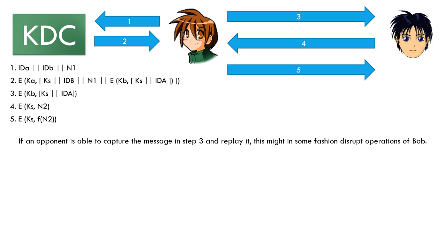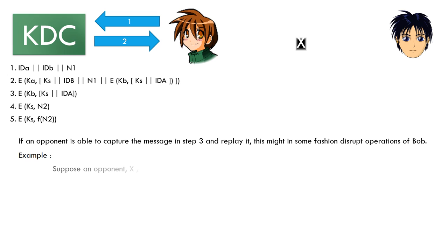If an opponent is able to capture the message in step 3 and replay it, this might in some fashion disrupt the operations of Bob. For example, suppose an opponent X has been able to compromise an old session key.